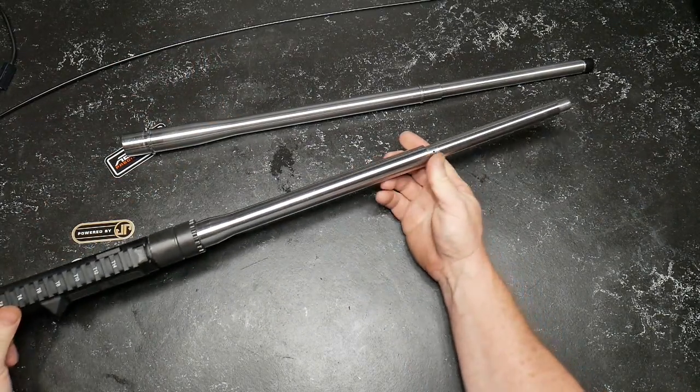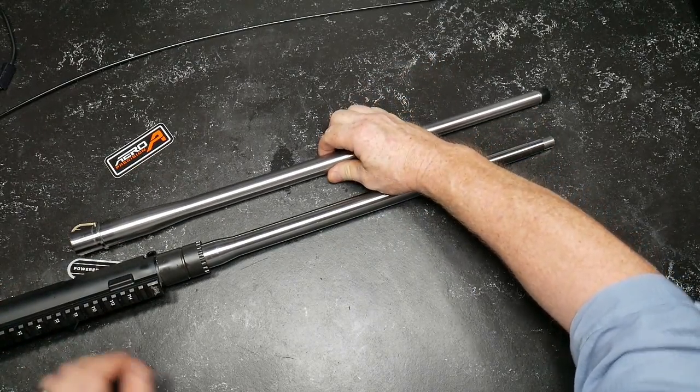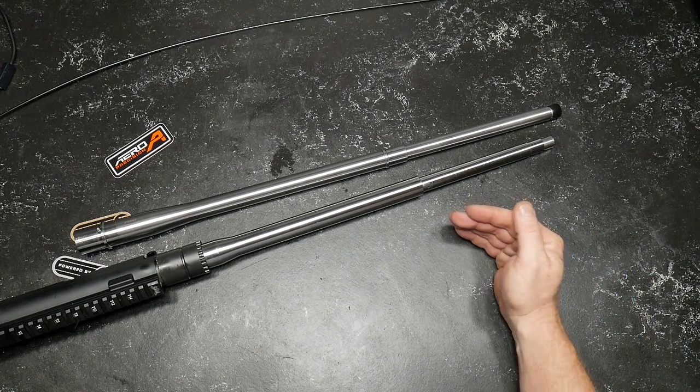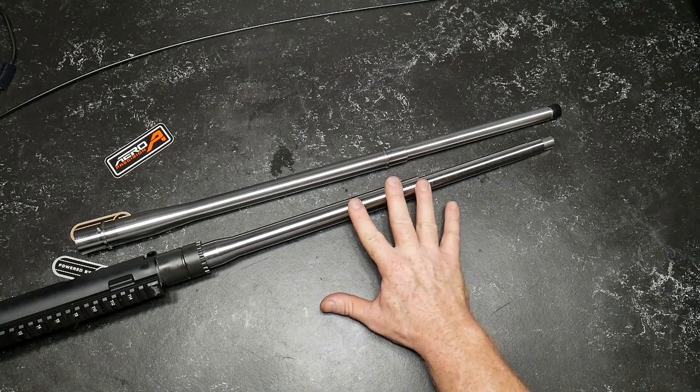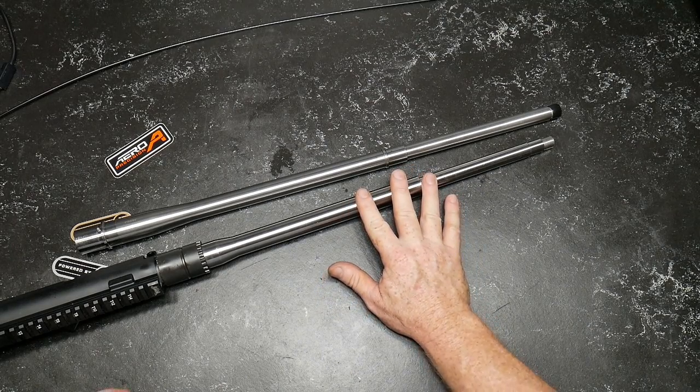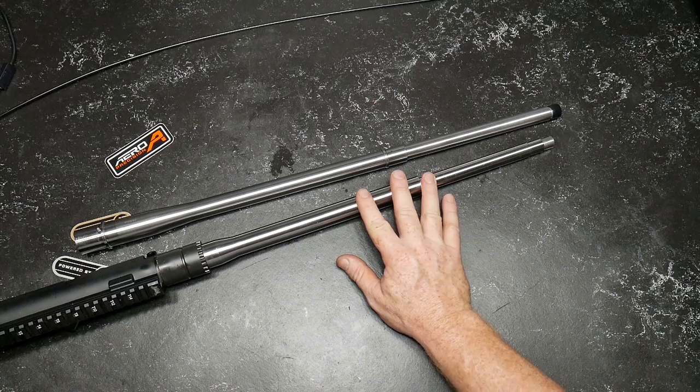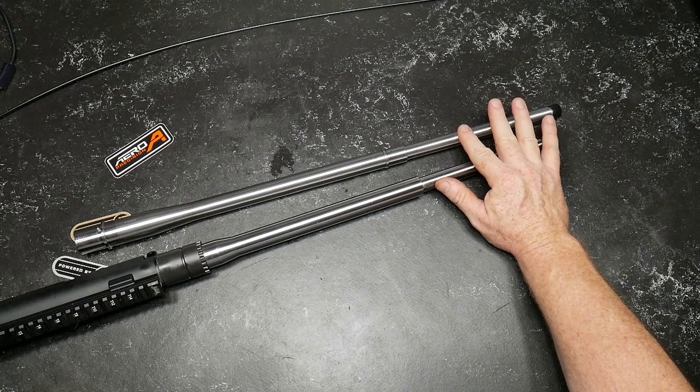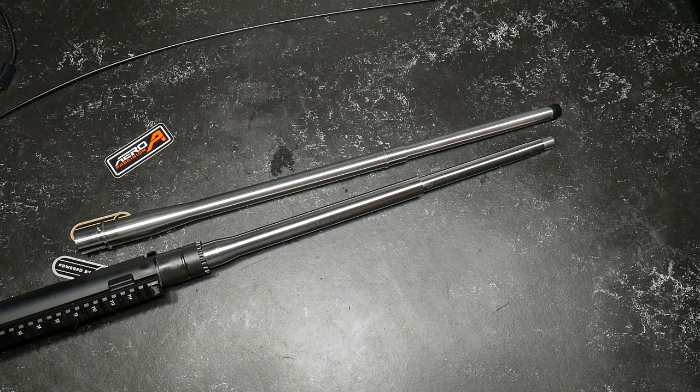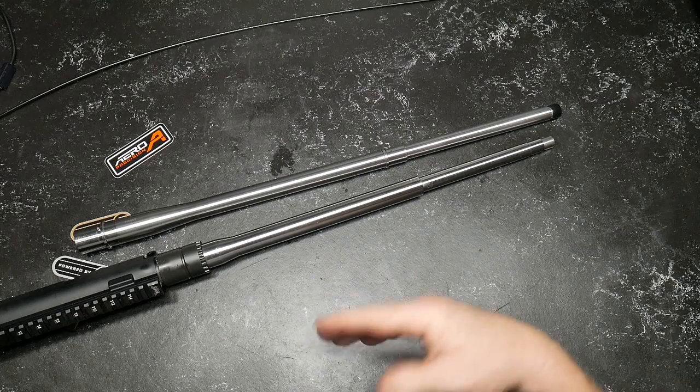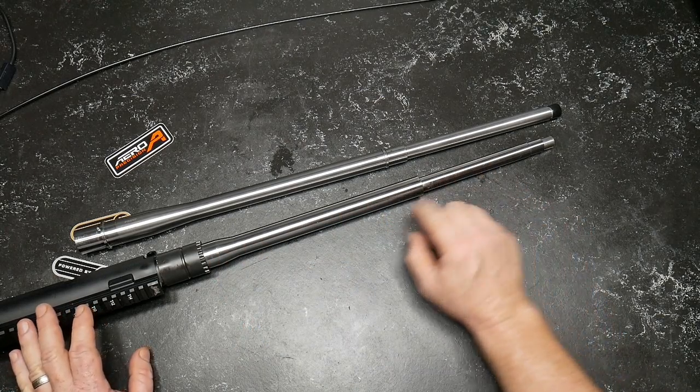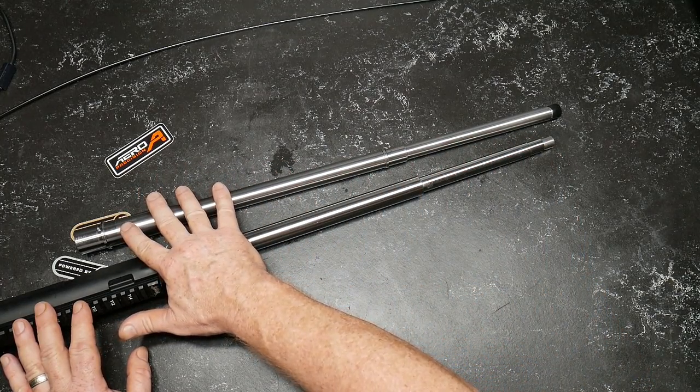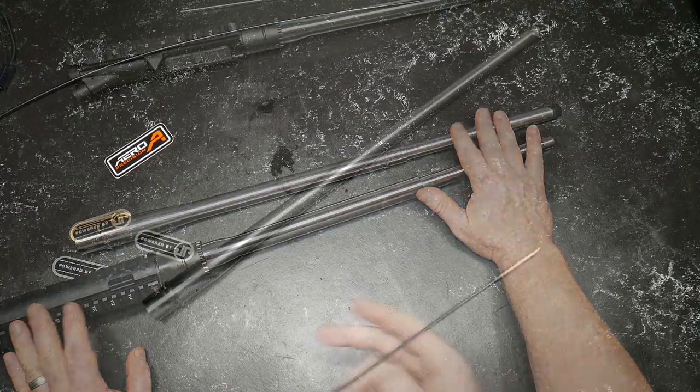This is the 6.5 Creedmoor. And if you look at these guys side by side, they really don't look a whole lot different. Really and truly, one of the biggest differences is the process. Now, this is a button rifle, and I was actually able to see and watch how that whole process happens. I can't remember what the Proof is, if it's a cut barrel or not. I don't know if you guys know, please let me know. But what we're going to do is take a look at the interiors of these barrels to let you see what the difference is between a drilled barrel that has been button finished versus a barrel like the Proof barrel that's been hand-lapped.